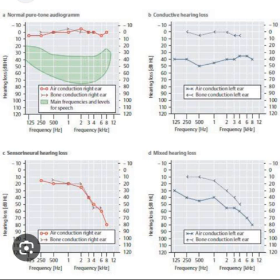Ototoxicity may cause sensorineural hearing loss by damaging various structures of the inner ear such as the cochlea's inner hair cells. Common causes include platinum-based chemotherapeutic agents, aminoglycosides, anti-malarial agents, anti-neoplastic drugs, loop diuretics, and high dosages of non-steroidal anti-inflammatory drugs. The audiogram pattern for ototoxicity is often similar to presbycusis, with bilateral sensorineural hearing loss more prominent in the high frequencies.